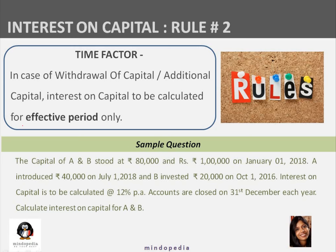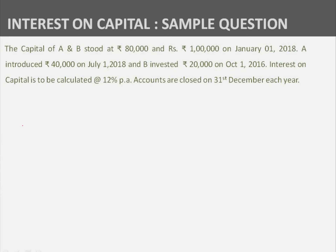Sample question: A and B's capital is 80,000 and 1,00,000 respectively on January 1, 2018. A introduced additional capital of 40,000 on July 1. B invested an additional 20,000 on October 1. Interest on capital is to be calculated at 12% per annum. Accounts are closed on 31st December each year. Calculate the interest on capital for A and B.